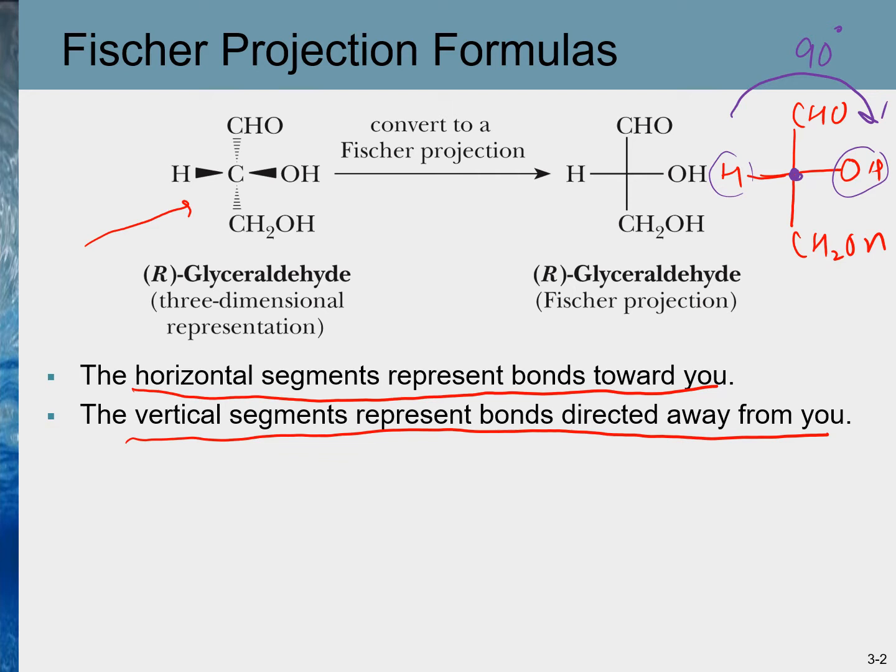Fischer projections are primarily used for analyzing sugars or carbohydrates. They are also helpful for quickly comparing relationships between stereoisomers — we can easily identify if stereoisomers are a pair of enantiomers or if they are diastereomers.